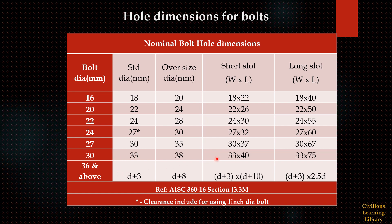For a 30mm bolt, the short slot hole is 33 by 40mm. For 36mm and above, the short slot hole is D plus 3mm for the width and D plus 10mm for the length. This applies when using 40mm diameter bolts and above.